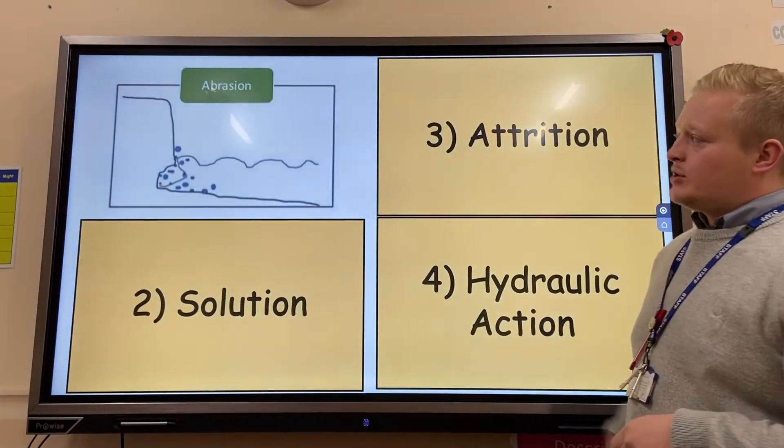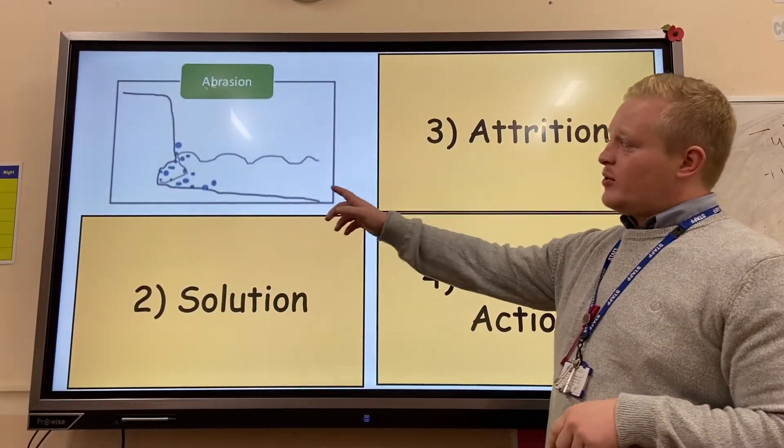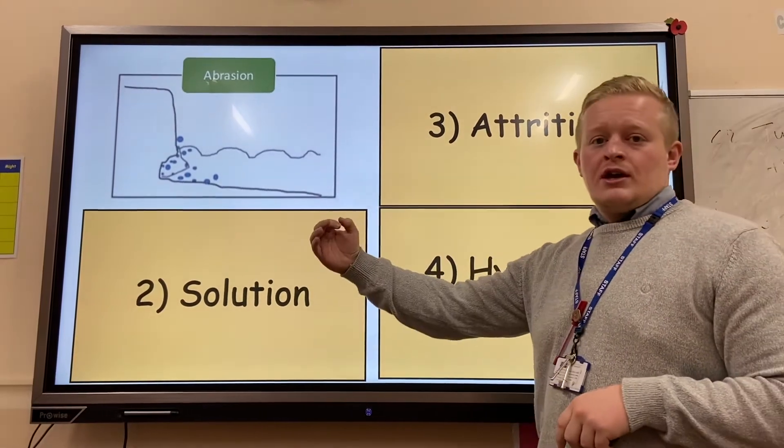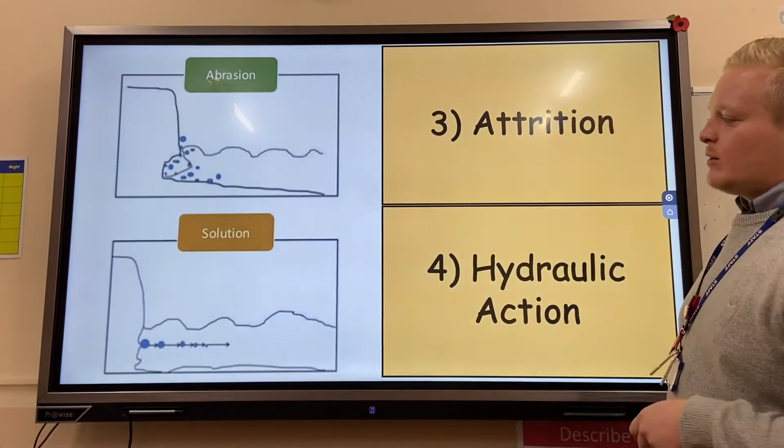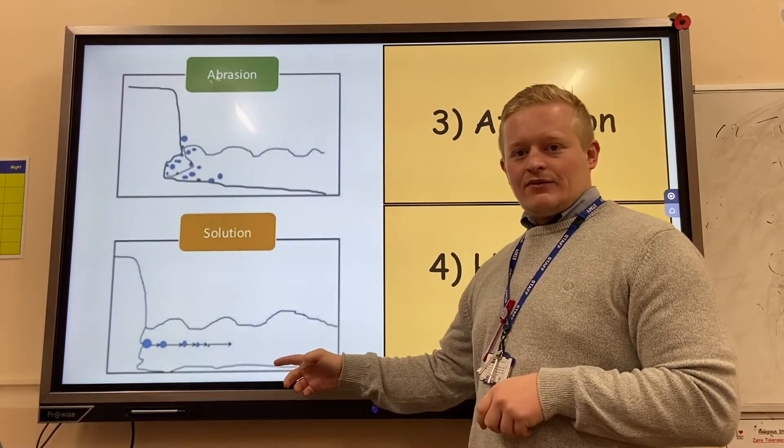Abrasion - so here you can see the blue, the different pieces of rocks or sediment that get hurled against the base of the cliff, causing a wave cut notch. The second one, solution: the natural acidity of the water